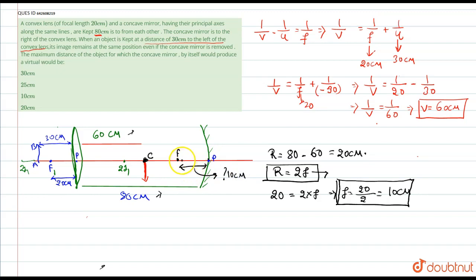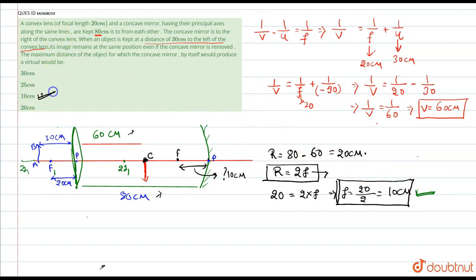The object should be placed within 10 cm to the left of the concave mirror to get a virtual image. So the maximum distance is 10 cm. Looking at the options, this corresponds to the third option. This is our answer — hope you got your answer, and thank you.